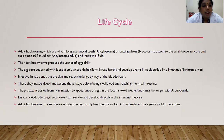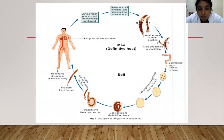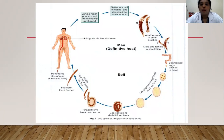The larvae of Ancylostoma duodenale, if swallowed, can survive and develop directly in the intestinal mucosa. In the life cycle diagram, the adult worms in the small intestine release segmented eggs which pass in feces. Development takes 1 to 2 days, then eggs containing rhabditiform larvae are released. The rhabditiform larva converts into the infective filariform form, penetrates the skin of the definitive host, enters the circulation into the lungs, ascends the alveoli, is swallowed, enters the small intestine, and develops into the adult worm in a vicious cycle.